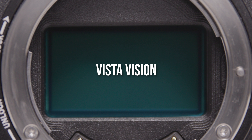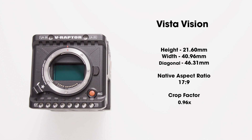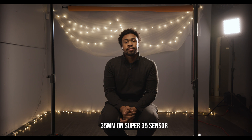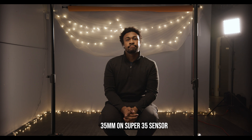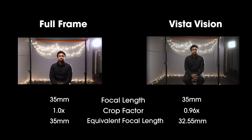VistaVision is a sensor type that was developed for widescreen use. Unlike most other types of sensors, the VistaVision sensor mimics 35mm film stock as if it was on its side, so that the perforations are at the top and the bottom of the image instead of on the left and right. This results in a 17 by 9 native aspect ratio.